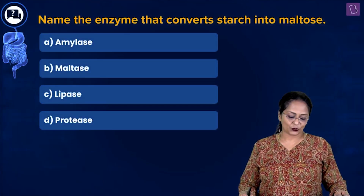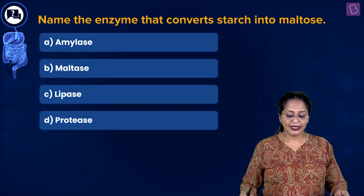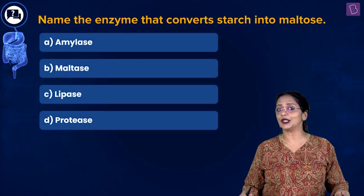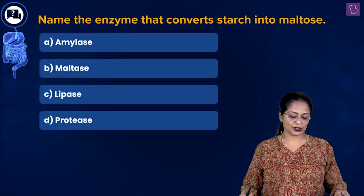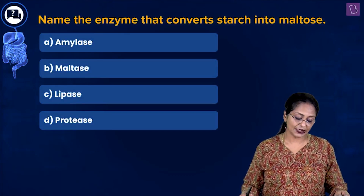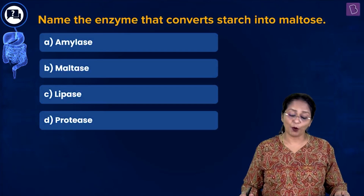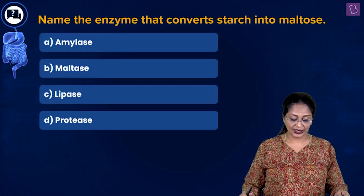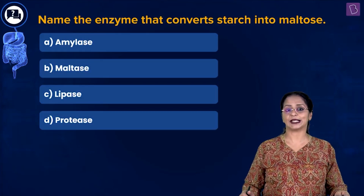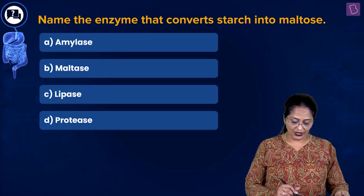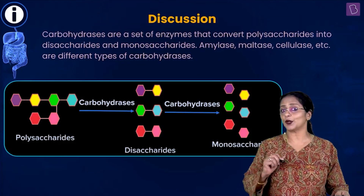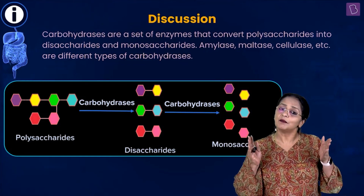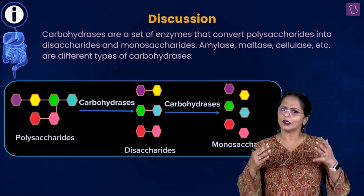Let us now look at this question: name the enzyme that converts starch into maltose. Is it A: amylase, B: maltase, C: lipase, or D: protease? We know that during the process of digestion, all complex polymers or molecules get broken down to simple substances or monomers.